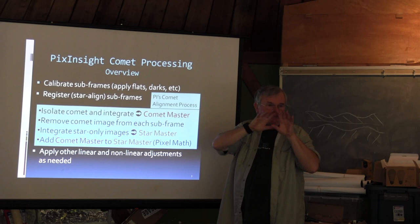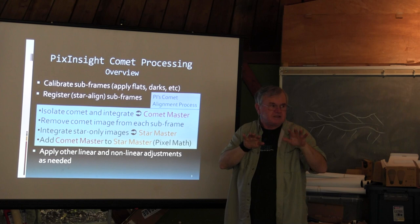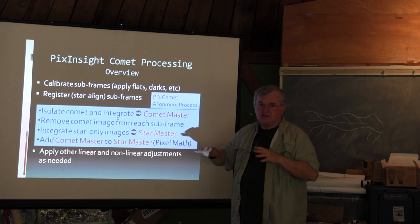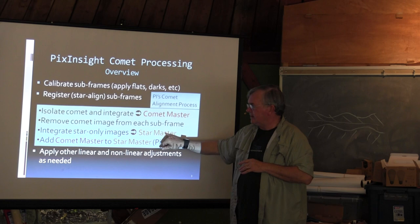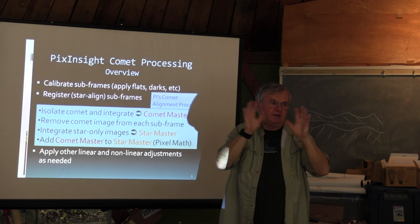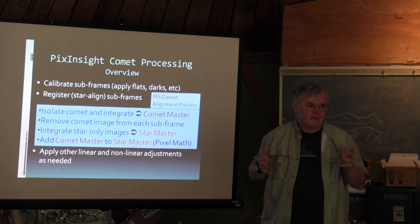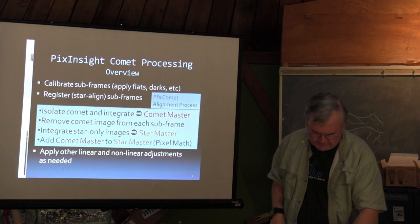These are the steps I'm going to talk about: we're going to isolate the comet, pull it out from the star field, and have a comet master. We're going to remove that comet master from every single one of the subs. We're going to integrate the star-only images — the images with the comet removed — to create a star master. Then you have a star master and a comet master, you superimpose one over the other, and as far as comet processing goes, you're done.